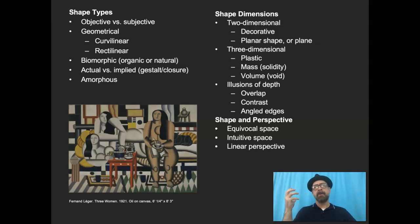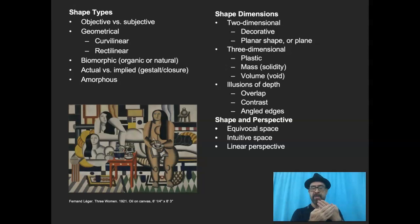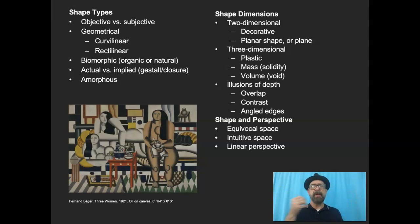Shapes are like the architectural building blocks of a composition. One definition: it's just a visually perceived area. However you differentiate that area from its surroundings is up to you — you can use line to outline a shape, or define shapes with color, value, or texture. However you define it, it is a separate area with boundaries.